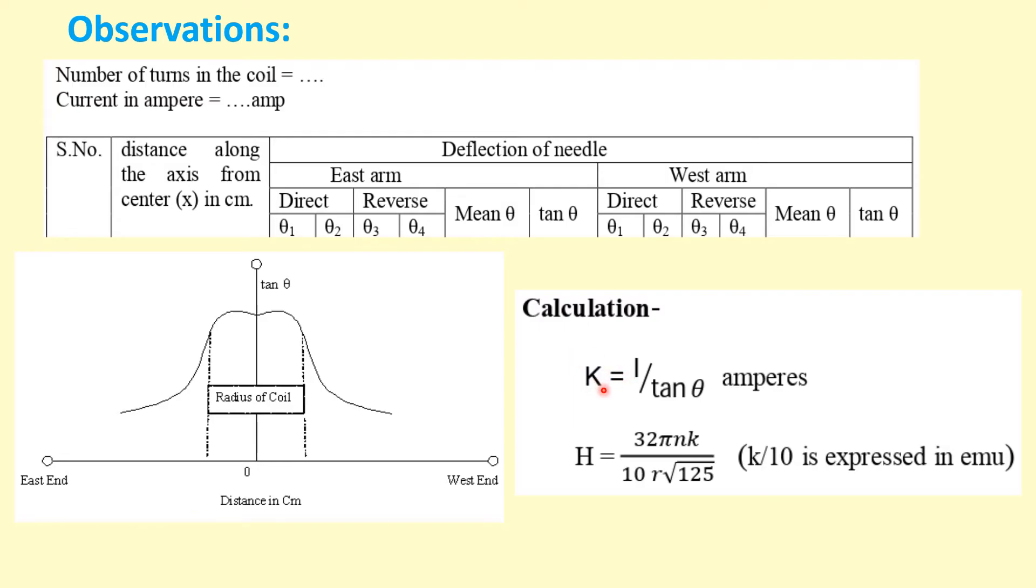Then we can find out the reduction factor k because we already know the I and we take the mean value of tan theta. Also the horizontal component can be calculated using these parameters because k we have calculated, pi is constant, n number of turns is known, r is radius of the coil. So from here we also have found the horizontal component of magnetic field of earth.